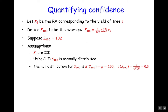And the null distribution — the distribution that says nothing really has any effect — is a normal distribution with mean 100 and standard deviation 0.5.